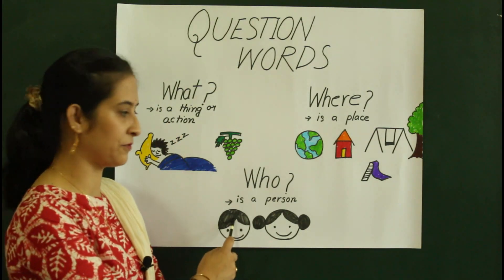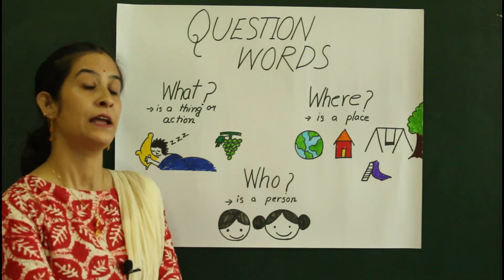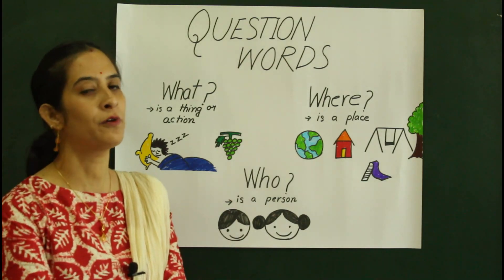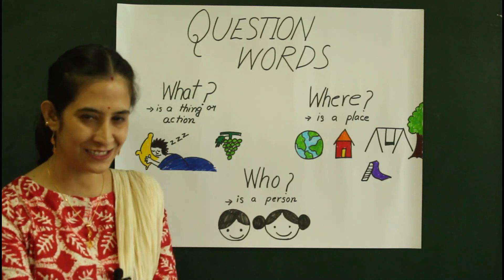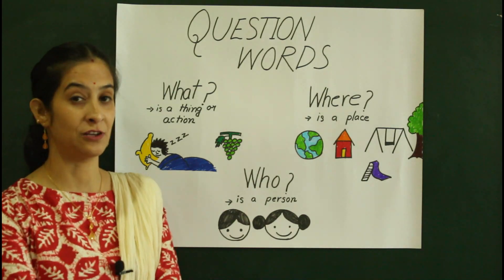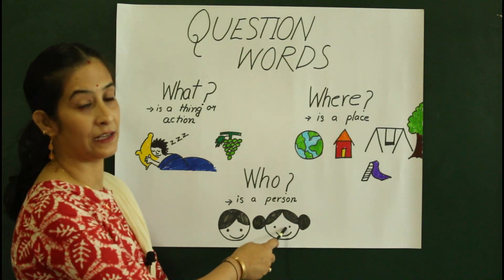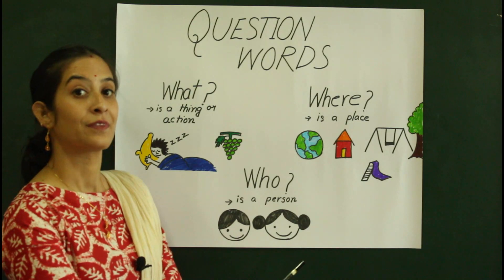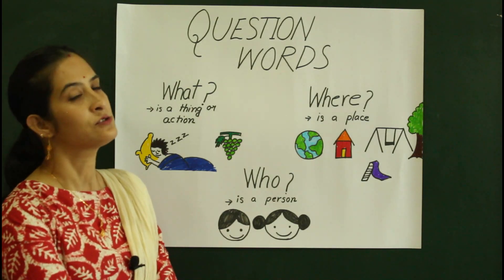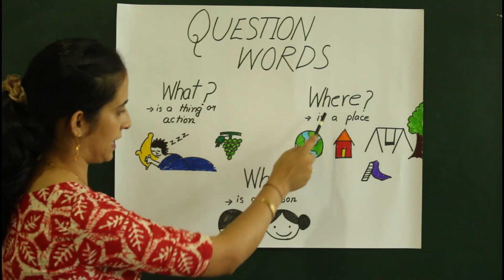The last question word is 'who.' 'Who' is used for a person. Any question related to a person, we use the question word 'who.' Who is teaching you? Your Kanchana ma'am. Who is your mama? Who is your papa? So when we have a question related to a person, we use the question word 'who.' So we have three question words: what, where, and who. Who is a person. Where is a place. What is a thing or action.